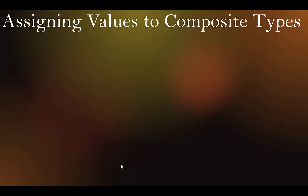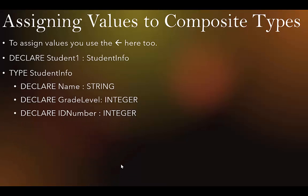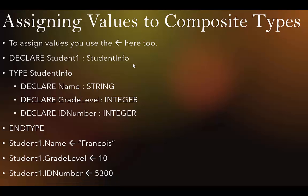Once you have your composite type, you can assign values to it using the left-hand arrow. Declare Student1 as StudentInfo, then: Student1.Name ← 'Francois', Student1.GradeLevel ← 10, Student1.IDNumber ← 5300. Notice the string uses double quotes, while integers for grade level and ID number don't need quotes. We show integers without quotes.